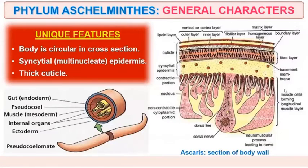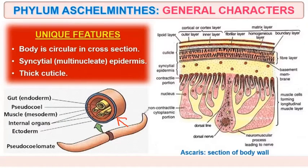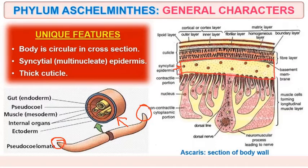A unique feature is that the body is circular in cross section. If you study the transverse section of this organism, you will find the body is entirely circular in nature — that is why they are called roundworms. They also have a syncytial epidermis, meaning the epidermis has many nuclei, and they have a thick cuticle.